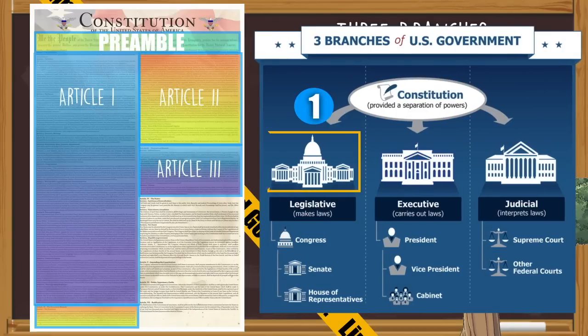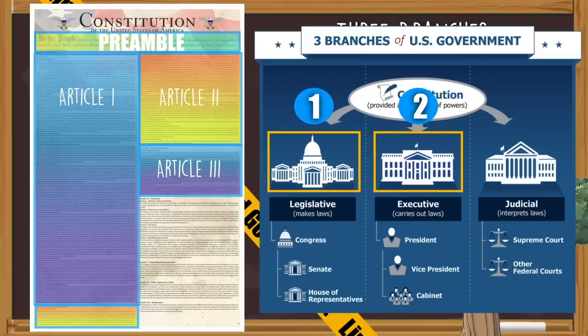Article 1 is about the legislative branch — Congress and lawmakers — and what they can and cannot do. Article 2 is about the executive branch: the president, the vice president, and all of the executive departments. Article 3 is the judicial branch, which includes the Supreme Court.